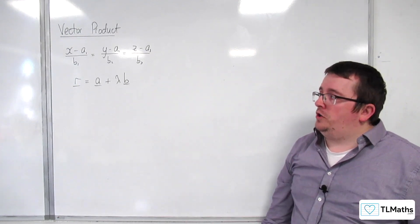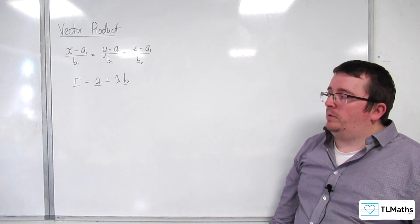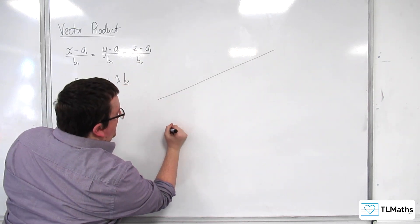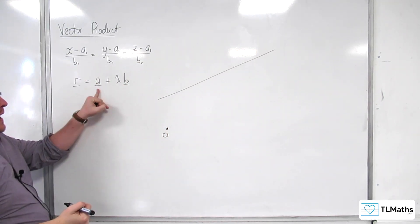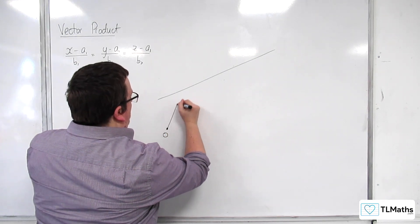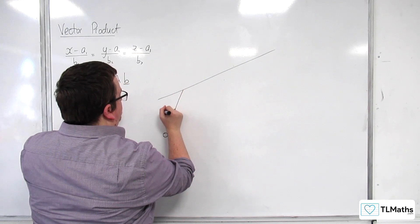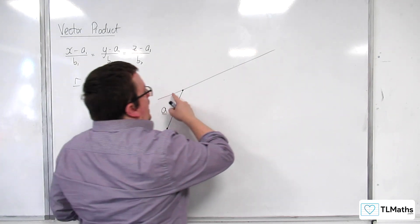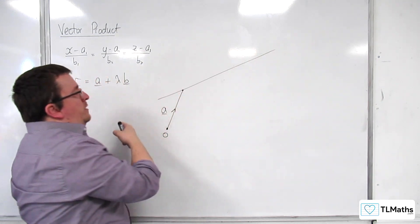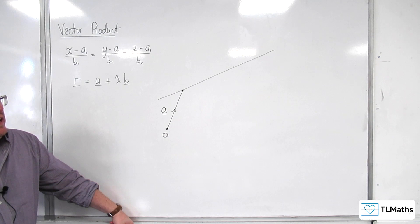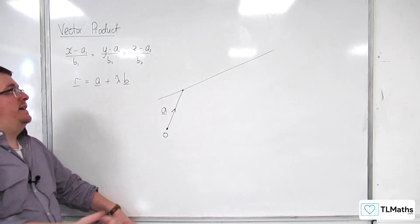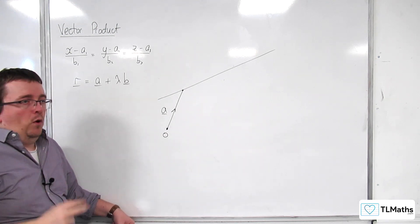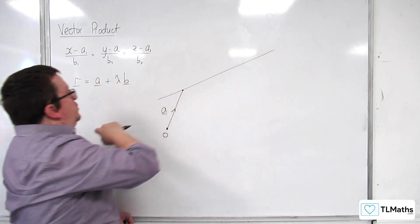We've also had the vector equation for a line: r equals a plus lambda b. Visually, how that worked was if we had the origin here, then the vector a gets you onto the line — it hops you onto the line. Once you're on the line, you want to go in multiples along the line to get anywhere else, so you need a direction to point in, which is b. Lambda is how many of b you want in order to move along the line to get to where you need.